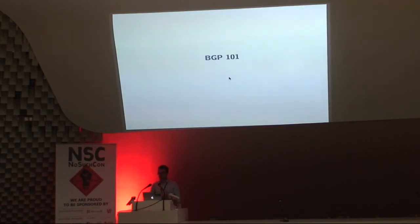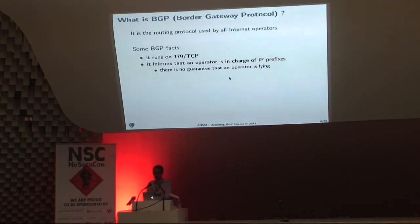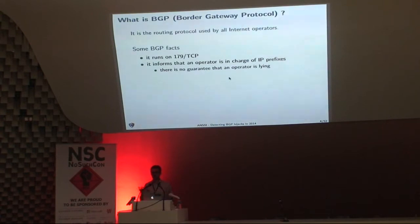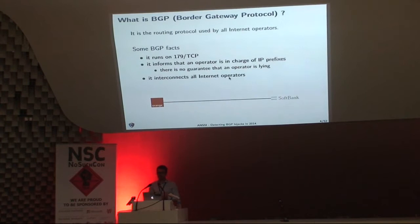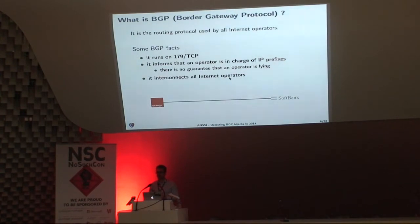So first, let's talk about BGP. What is BGP? It stands for Border Gateway Protocol — that's the only routing protocol used on the internet. It runs on top of TCP over a dedicated interconnection between operators, which could be fiber or copper cable. The main goal of BGP is to inform the world that an operator is in charge of IP prefixes, and its second goal is to interconnect all of the internet operators. Here you can see a simple example where we are trying to interconnect Orange, a French ISP, to SoftBank, a Japanese ISP, and of course there is no direct cable between France and Japan.